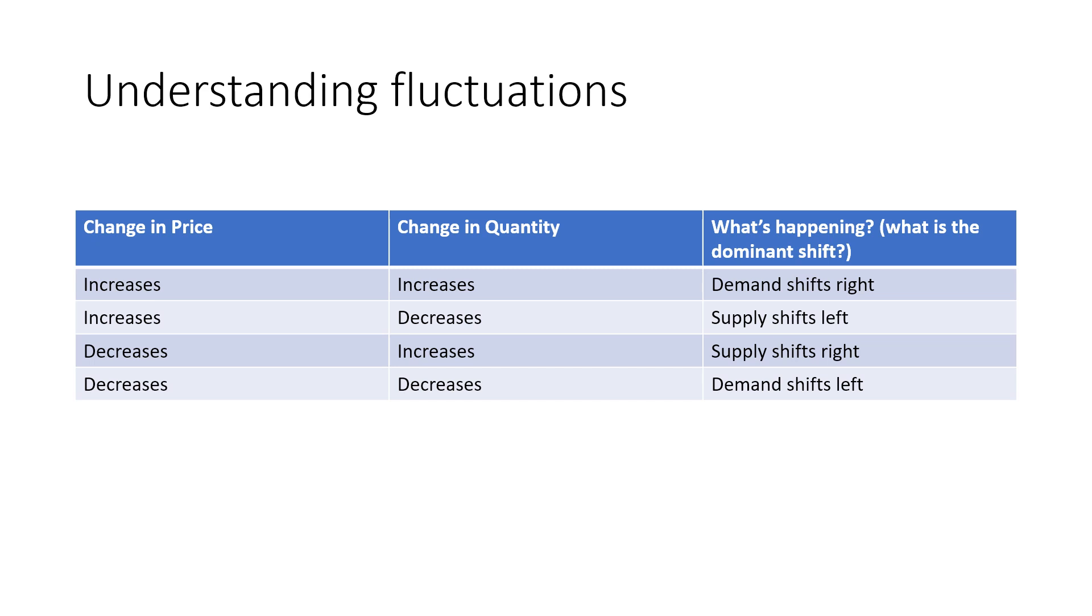There's really only four things that could happen. The first case is where we have a change in price which increases and the change in quantity which is going to increase, and we ask the question what's happening here? Well in that case we have a demand shift which is moving to the right. Since this data is moving pretty quickly, we're going to say what is the dominant shift, so there's a rightward demand shift.